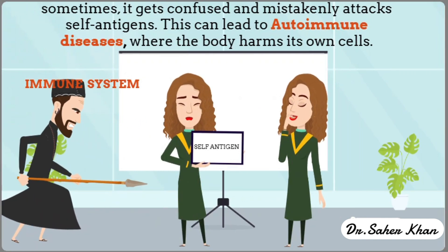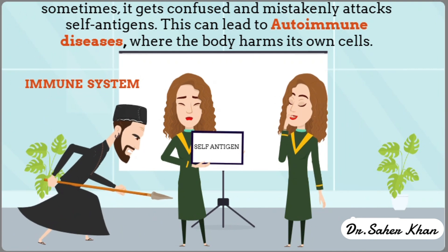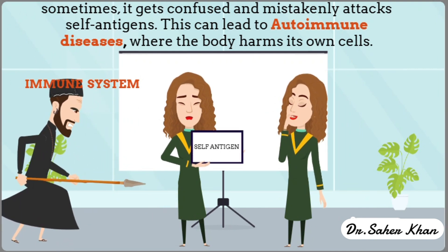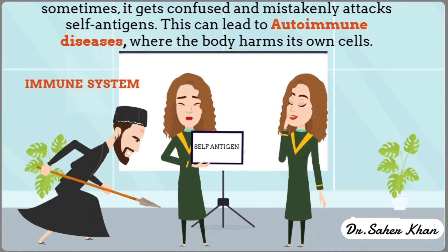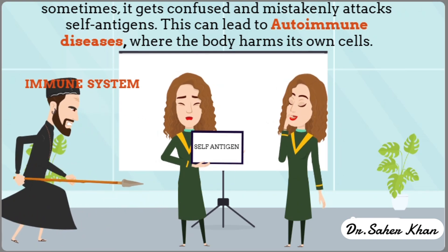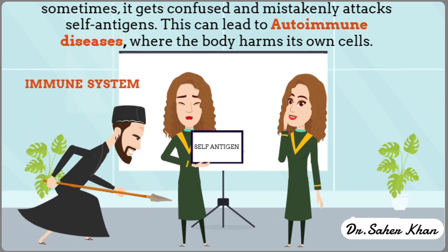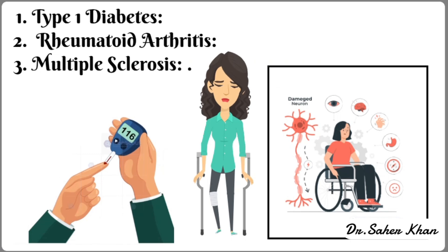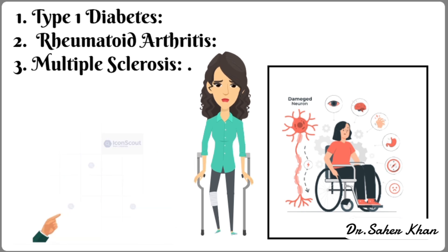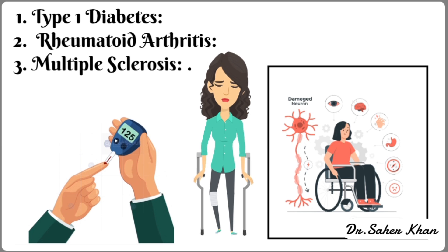But sometimes the immune system gets confused and mistakenly attacks self-antigens. This can lead to autoimmune diseases where the body harms its own cells. As a result of this confusion, various autoimmune diseases can occur, leading to inflammation and tissue damage in the body.